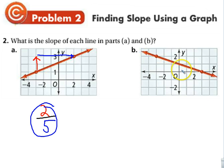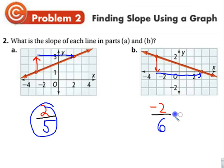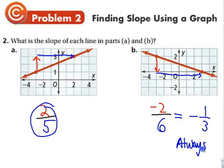For the second example, we move from one dot to another — going down 2 for the rise, then over 1, 2, 3, 4, 5, 6 for the run, which gives negative 2 over 6. That simplifies to negative one-third. We always simplify our slopes.